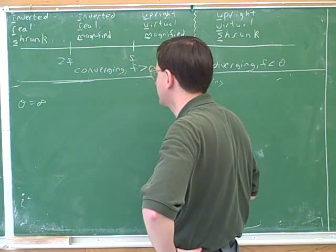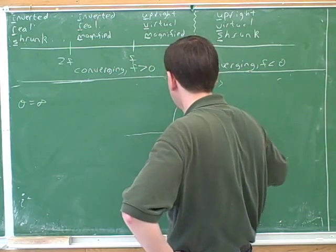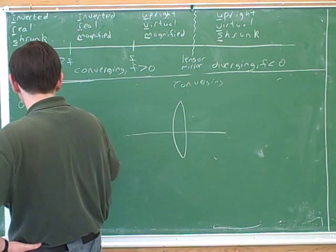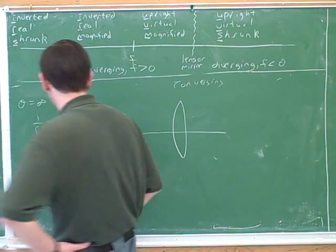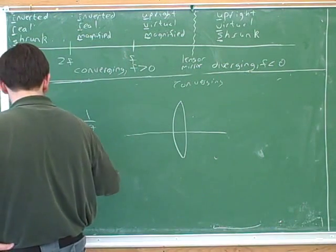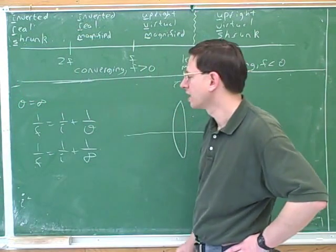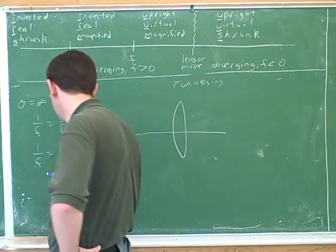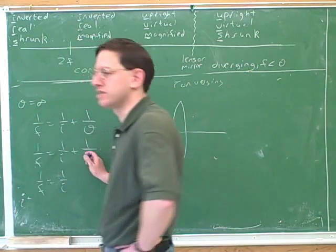Let's say we have a converging device and the object is at infinity — I'll draw a lens. Let's see what happens to our lens/mirror equation. When we plug in infinity for O, the equation becomes 1/f = 1/i, because 1 over infinity is 0.